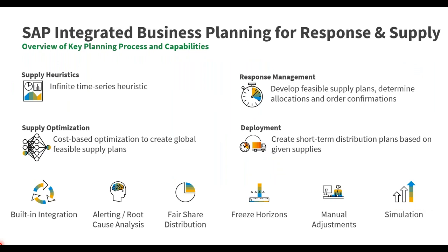Now let's jump into response and supply. We cover different topics under the response and supply umbrella from both process and functional capability perspectives. On the left-hand side, for those familiar with APO or MRP, we have unconstrained supply heuristics — basically the MRP run that tells you through lead times and multi-level bill of material how much you need and when, but without constraining against capacity, though it will flag capacity problems from both material and resource perspectives.